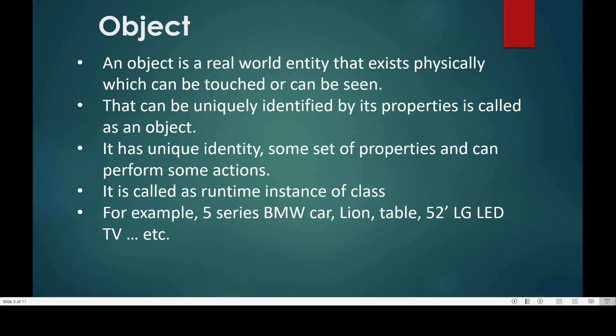TV is a generalized version. But if you want to talk about a specific TV, you have to identify it by its properties — like 52 inches, what is the brand of the TV, what is the monitoring display of the TV. Then you can identify it as a 52-inch LG LED TV or a Sony LED TV. That is called an object — whenever we are talking about specific properties of an entity that exists in the real world, that is called an object.